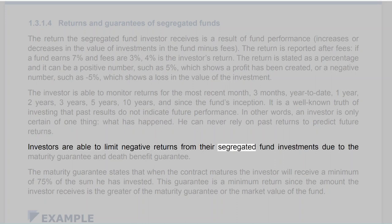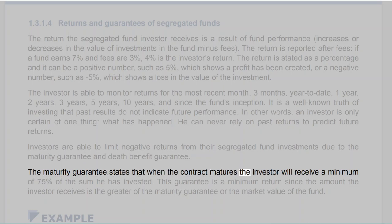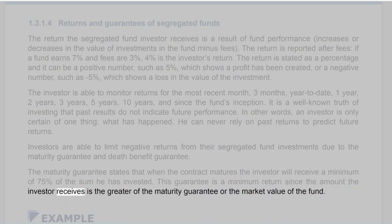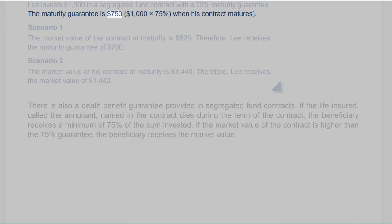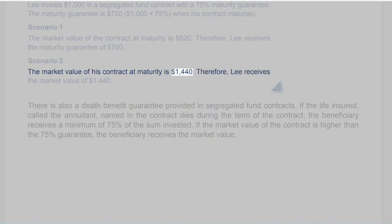Investors are able to limit negative returns from their segregated fund investments due to the maturity guarantee and death benefit guarantee. The maturity guarantee states that when the contract matures, the investor will receive a minimum of 75% of the sum invested — the investor receives the greater of the maturity guarantee or the market value. For example, Lee invests $1,000 in a segregated fund with a 75% maturity guarantee ($750). Scenario 1: if the market value at maturity is $620, Lee receives the maturity guarantee of $750. Scenario 2: if the market value at maturity is $1,440, Lee receives the market value of $1,440.